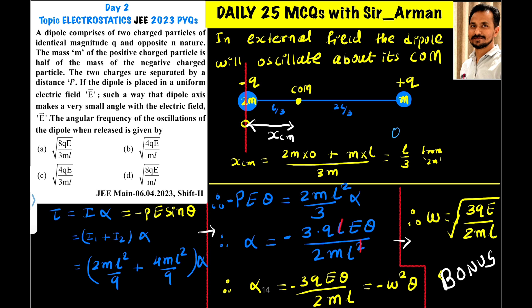This is the angular frequency of oscillation. Since none of the options match directly, this may be a bonus question. If the question asks for the frequency of oscillation rather than angular frequency, use f = ω/(2π) and rearrange to match the answer choices.